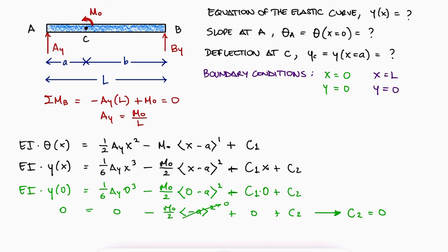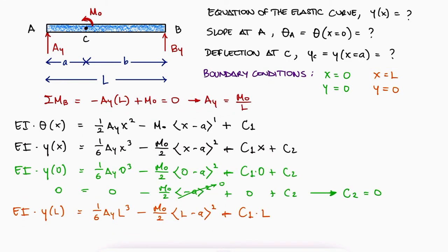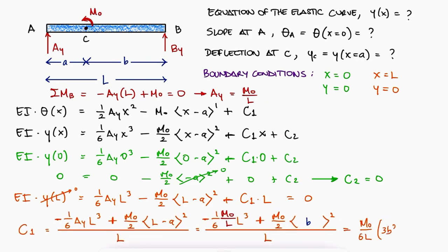Using the second boundary condition, which means using the same equation, now without C2 since we already know C2 is 0, means substituting x with L and y of L with 0. Solving for C1 and substituting the variables for Ay and L minus A, we can find a simplified expression for C1.